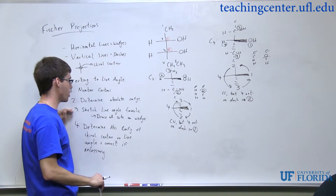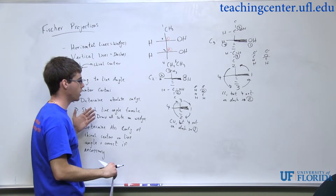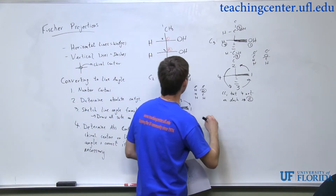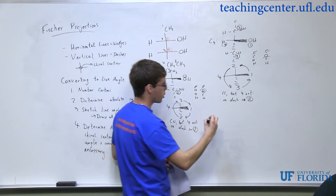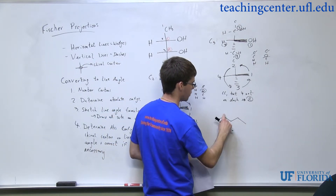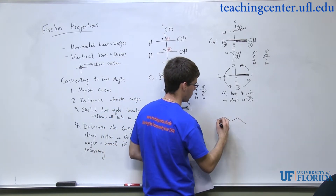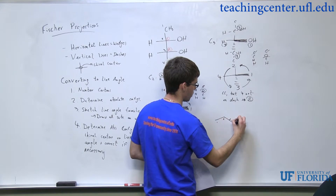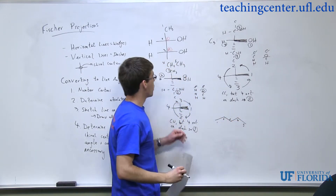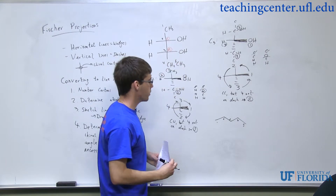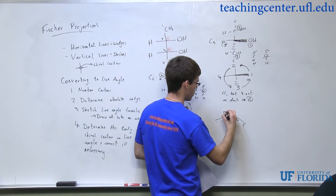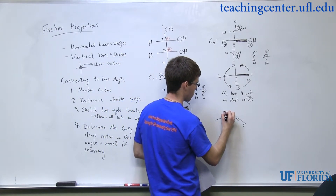On to step three — sketch a line-angle formula, and I draw all my substituents on a wedge. We've got five carbons, so: one, two, three, four, five. I'll number them. My chiral centers were two and three, and I draw my OHs on wedges.